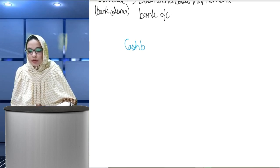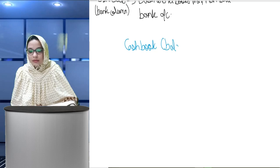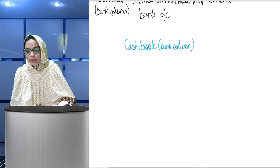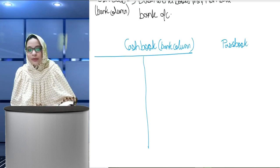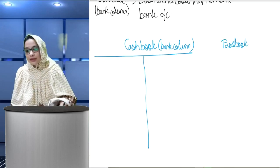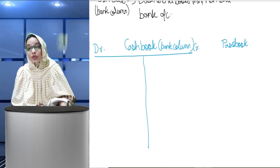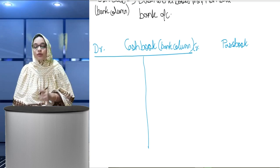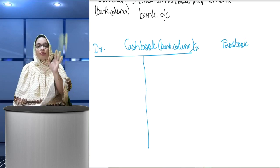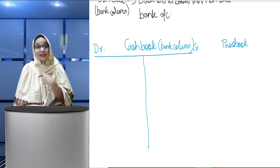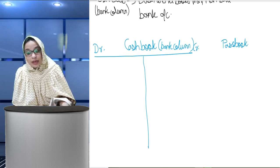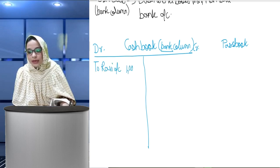So this is my cash book bank column and this is my pass book. In your books, whenever money comes into the business, you debit it. Suppose a check is received from Ravi and deposited immediately — so entry is: bank account debit to Ravi account, amount suppose 1 lakh. Then suppose a check is issued to Mohan — entry is: Mohan account debit, bank account credit, amount suppose 50,000.